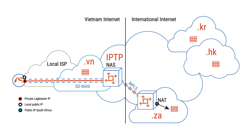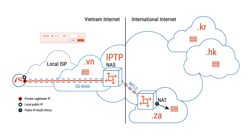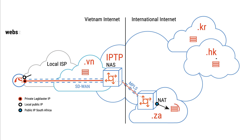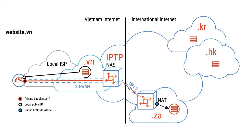For example, when you choose the main route to be Johannesburg and configure traffic from the Lag Blaster management portal, all traffic to South Africa will be routed to the Africa node, while other traffic continues to be routed via the local ISP. Lag Blaster separates international traffic from domestic traffic, so domestic traffic continues going through local ISPs and won't be sub-optimized when using local services.